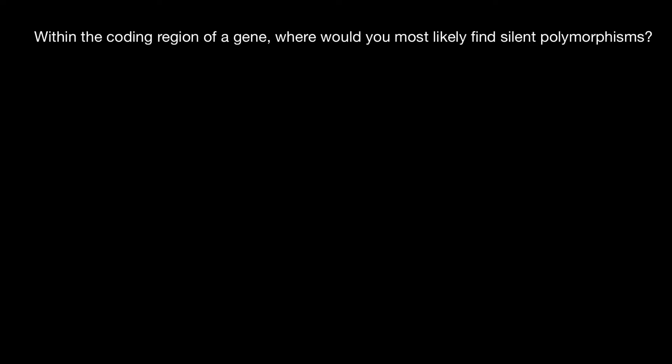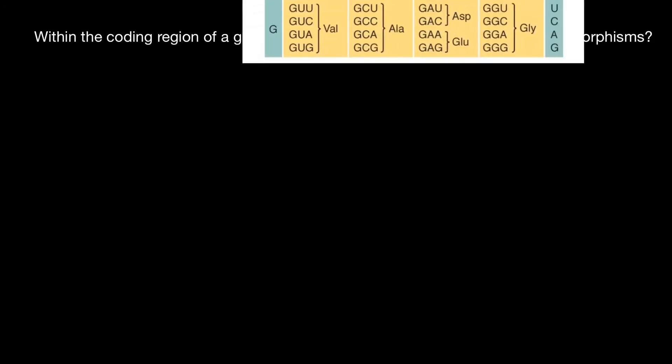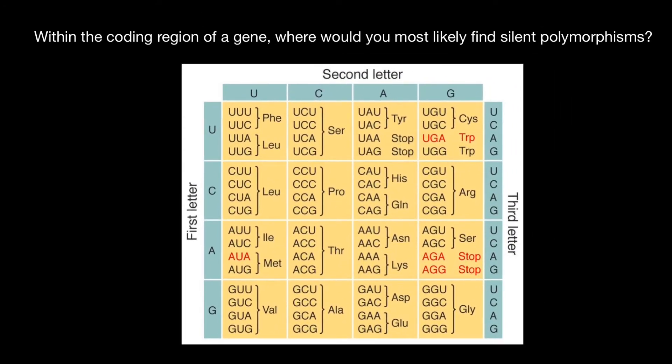Hello and welcome to Nikolai's genetics lessons. Today's question is: within the coding region of a gene, where would you most likely find silent polymorphisms? Most polymorphisms and mutations we can find in the non-coding sequence of the gene, which we call introns. But within exons, we can also find such polymorphisms — mutations that lead to polymorphism in the third position of a codon.